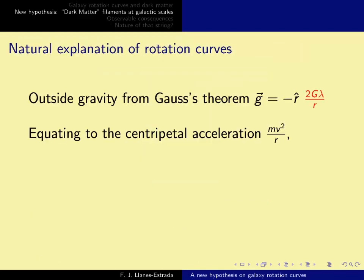Right, so let's see how this is a natural explanation of the rotation curves. The gravity outside the cylinder falls off from Gauss's theorem to be g, the acceleration, equals minus a vector pointing outwards, and then 2G lambda divided by r. Let's equate this to the centripetal acceleration that is needed to make stars rotate around the galactic center, and this is mv squared over r.